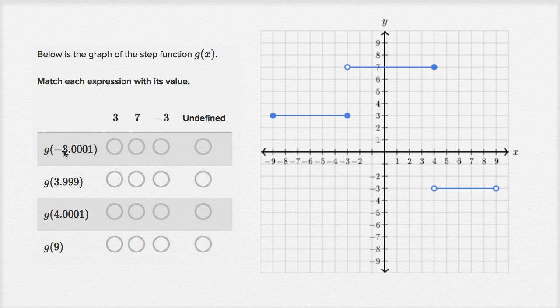So g(-3.0001). So -3.0001. So that's right over here. And g of that, we see, is equal to 3. So this is going to be equal to 3 right over here.